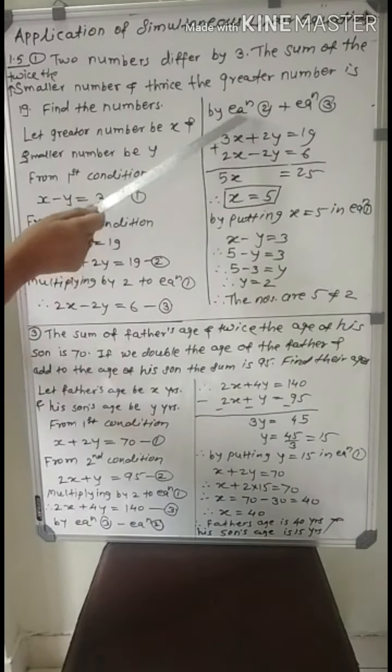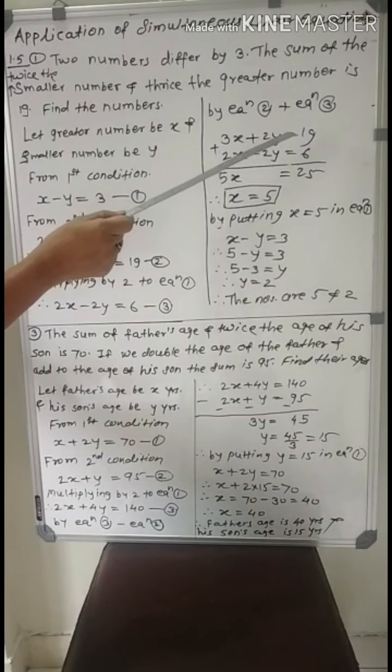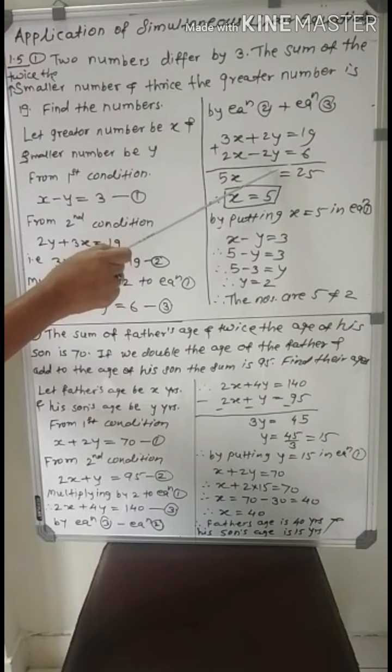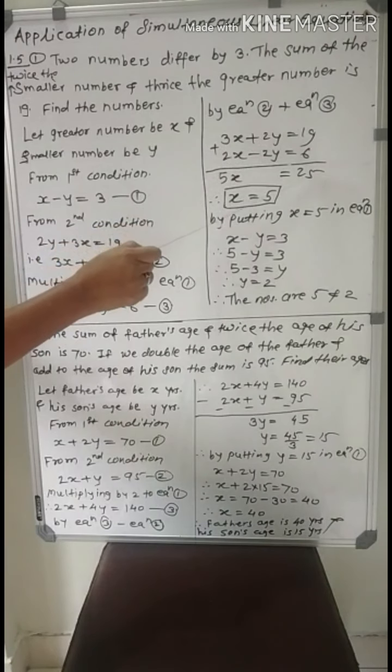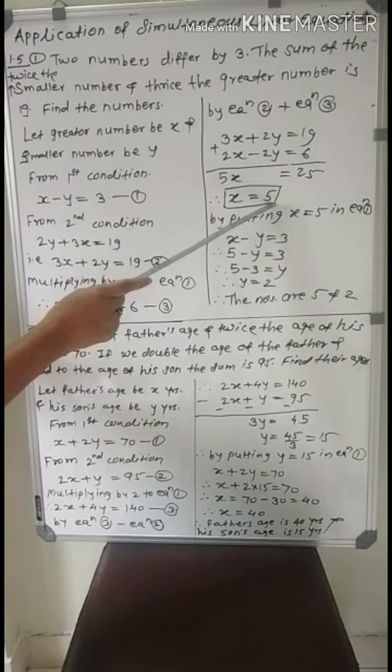Now by adding equations 2 and 3, write equation one below the other: 3x plus 2y equal to 19, and 2x minus 2y equal to 6. So plus 2y minus 2y will be cancelled, and 3x plus 2x equals 5x. 19 plus 6 equals 25. Therefore, x equals 25 upon 5, equals 5.